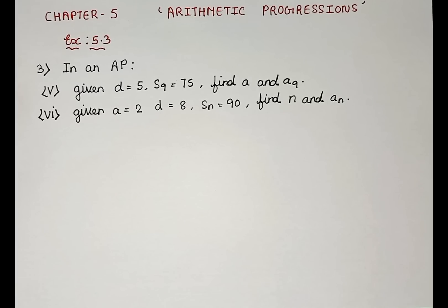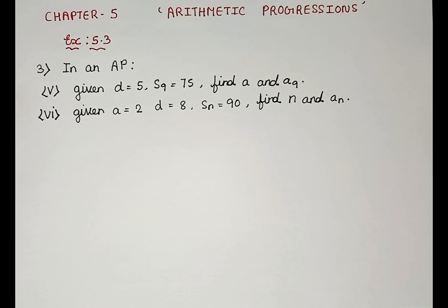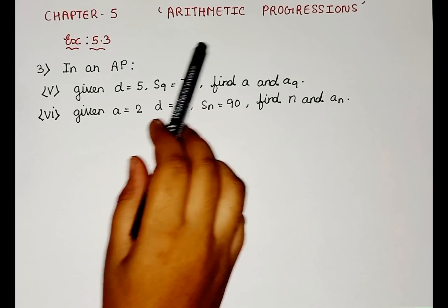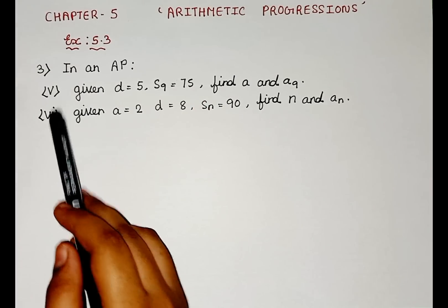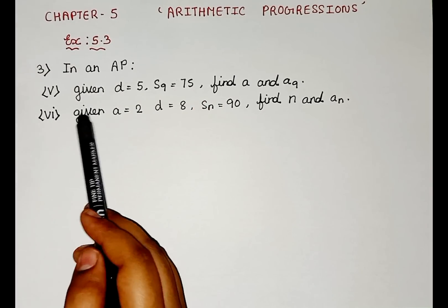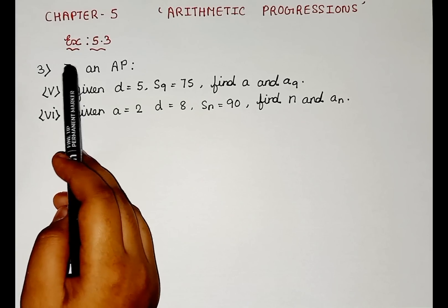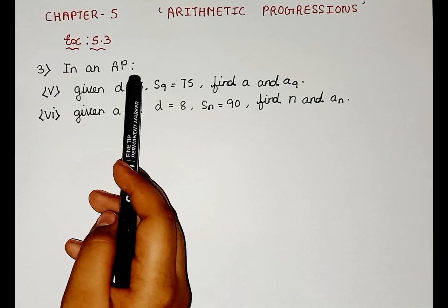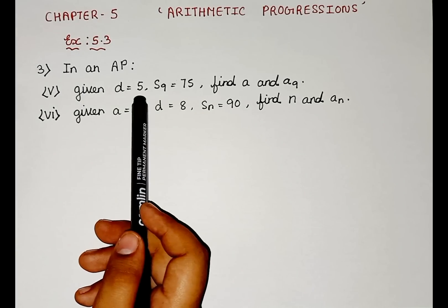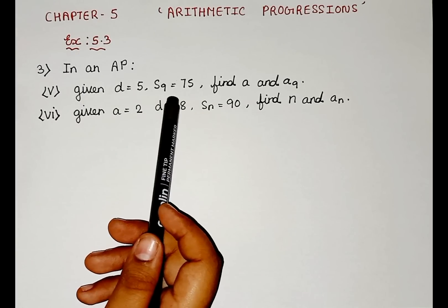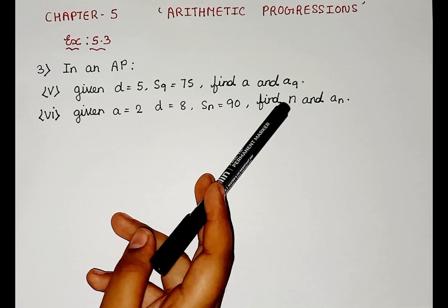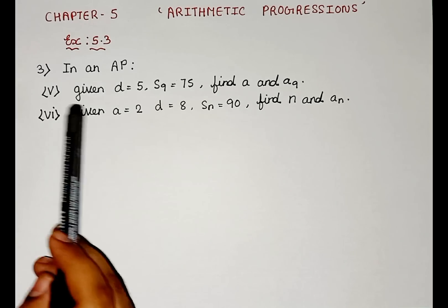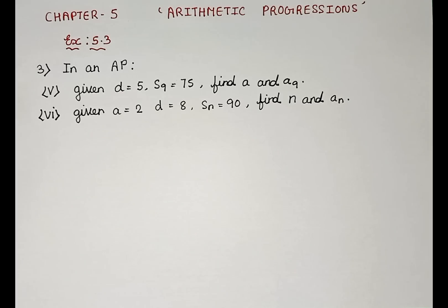Today we are going to be learning Chapter 5, Arithmetic Progressions, Exercise 5.3, 3rd question, 5th and 6th subdivision. Now let's read the question. In an AP, given D is equal to 5, S9 is equal to 75, find AN and A9. So this is the 5th subdivision.